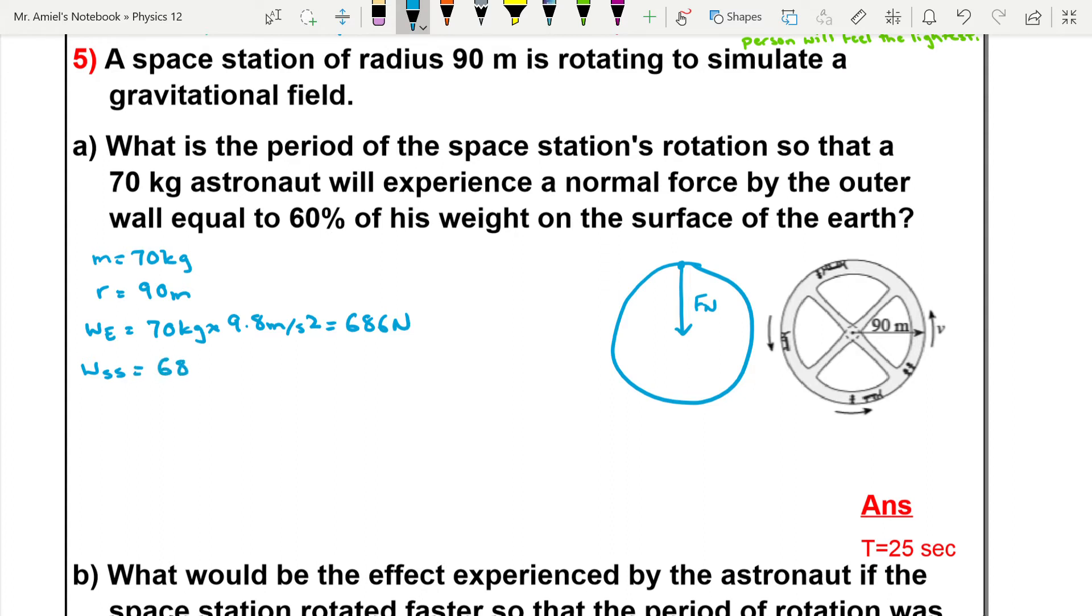686 Newtons, the weight on Earth, times 0.6 or 60%, and that's going to give us 411.6 Newtons.